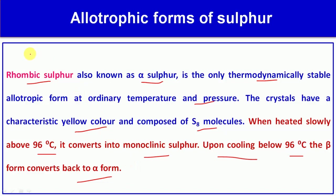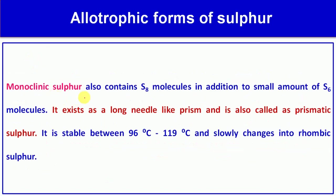Next, we are going to discuss monoclinic sulfur. Monoclinic sulfur also contains S8 molecules in addition to a small amount of S6 molecules. It exists as long needle-like prisms and is also called prismatic sulfur.